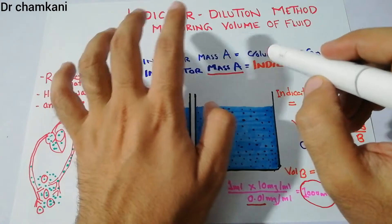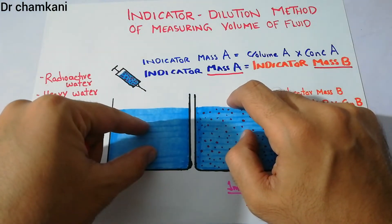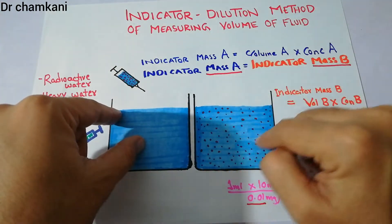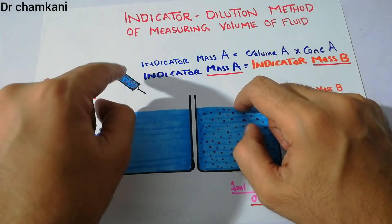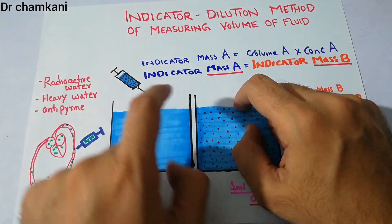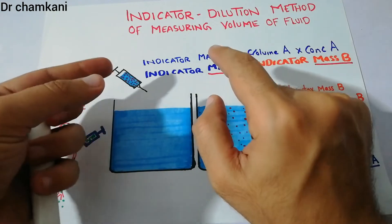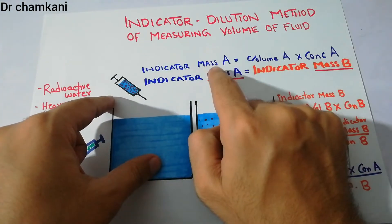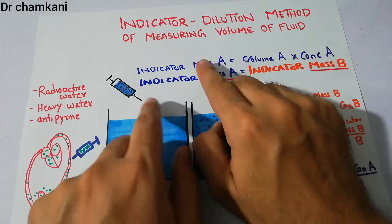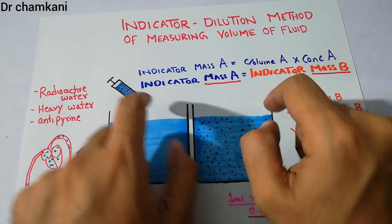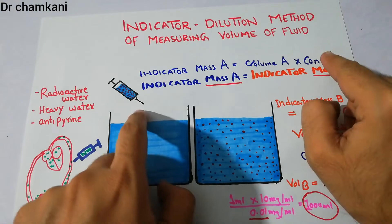To summarize: in the indicator dilution method, we take an indicator — a dye — and put it into a fluid. That indicator disperses into the fluid, and its mass before putting it in and after putting it in remains the same. For example, if its volume is 1 ml before putting it into the fluid, its volume remains 1 ml after. With the law of conservation of mass, the mass of the indicator before putting it into the fluid was mass A and after putting it in was mass B. Mass in general is the combination of volume multiplied by concentration of that substance. When we put the dye into the fluid, it dispersed, so its concentration decreased.